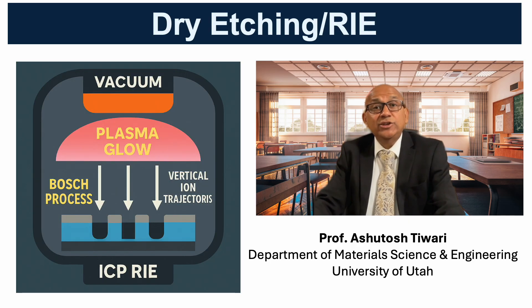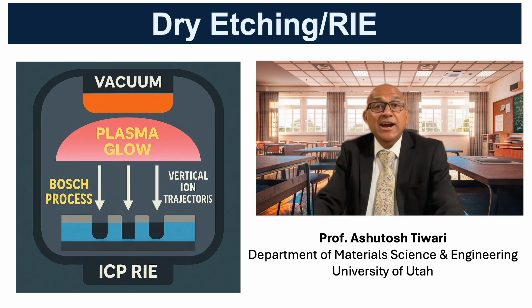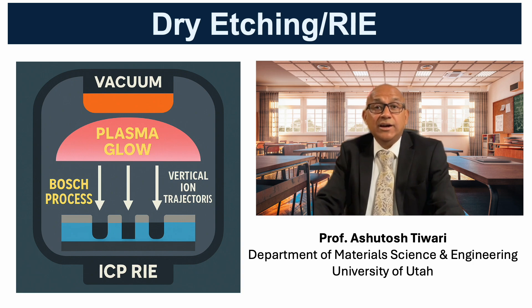Dry etching uses plasmas and ion bombardment to achieve anisotropic, controllable profiles. In plasma etching, reactive neutral species chemically attack the surface. In reactive ion etching, RIE, ions are accelerated toward the wafer by an electric field, physically sputtering atoms and assisting chemical reactions at the surface.